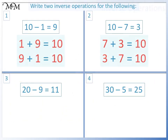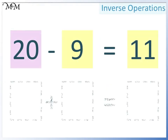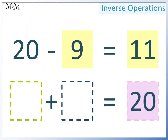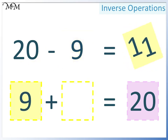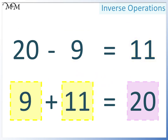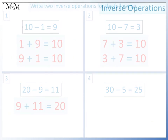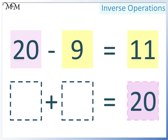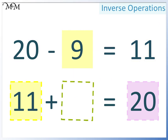Question 3: 20 take away 9 equals 11. The largest number goes here. Either of the two smaller numbers go here, and so the other smaller number goes here. 9 plus 11 equals 20. Now for the second way — again, 20 goes at the end. This time we will write 11 here, and so 9 must go here. 11 plus 9 equals 20.